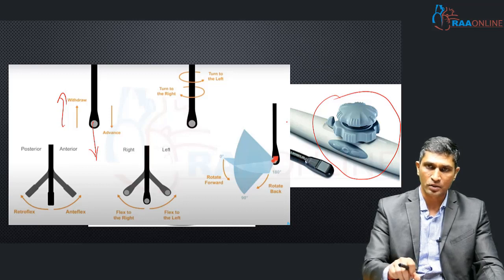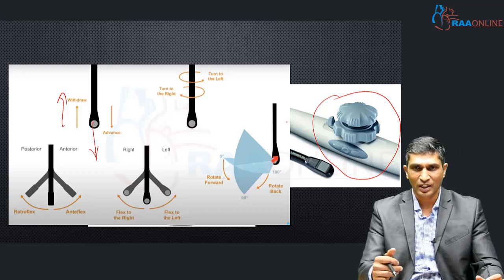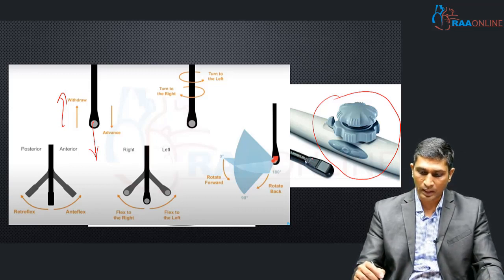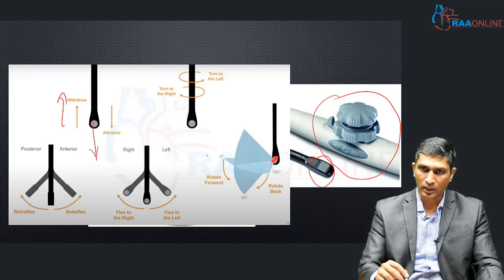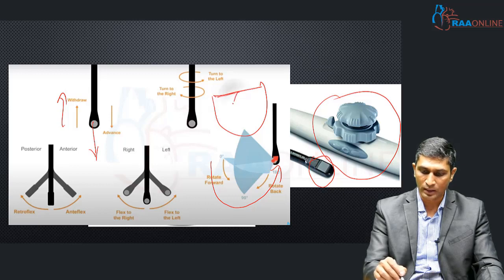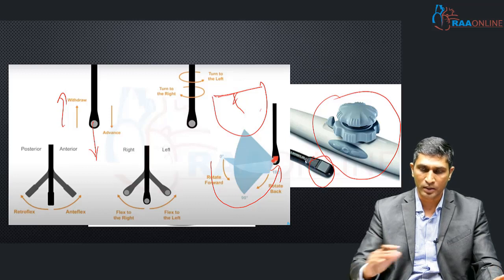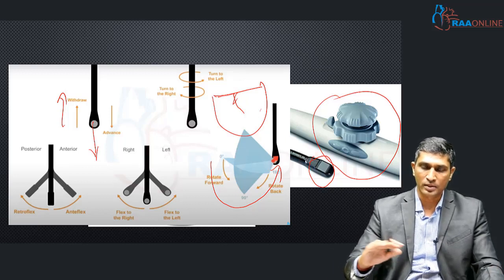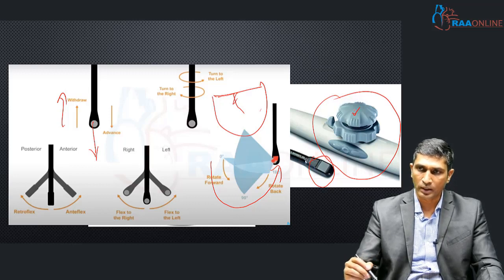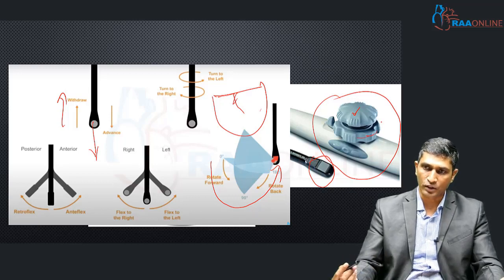Rotating to the right visualizes the right side structures, rotating to the left visualizes the left side structures of the heart. The probe has a multiplanar axis which rotates from 0 degrees to 180 degrees, dissecting the heart in various sections. There are two knobs: one used to rotate left and right, and the bigger knob used for anteflexion and retroflexion.